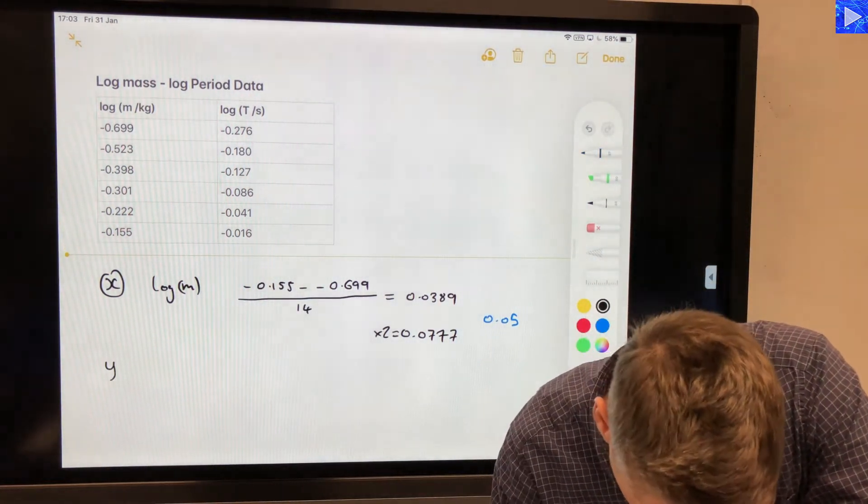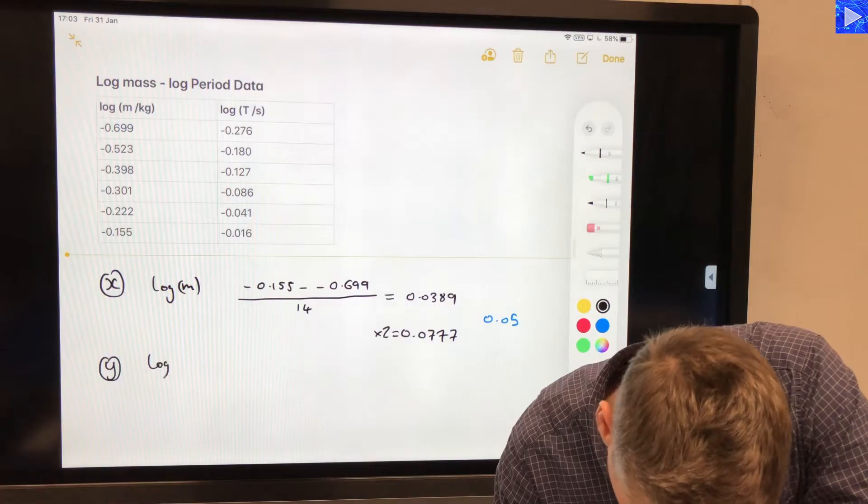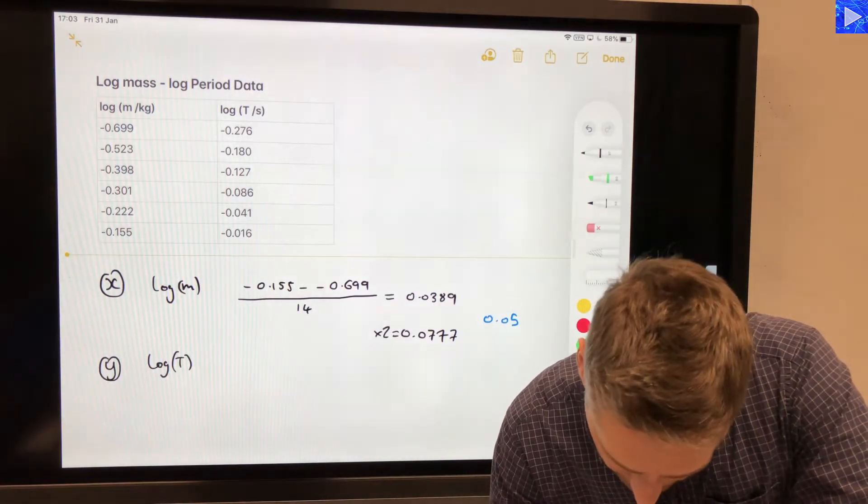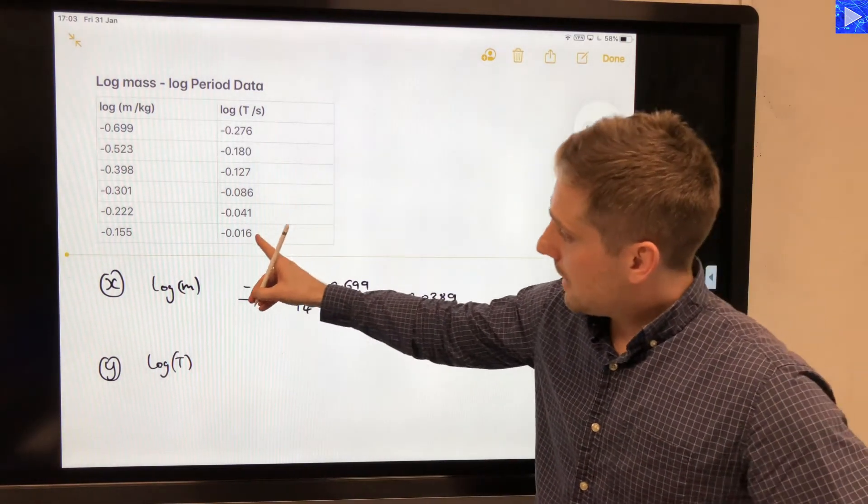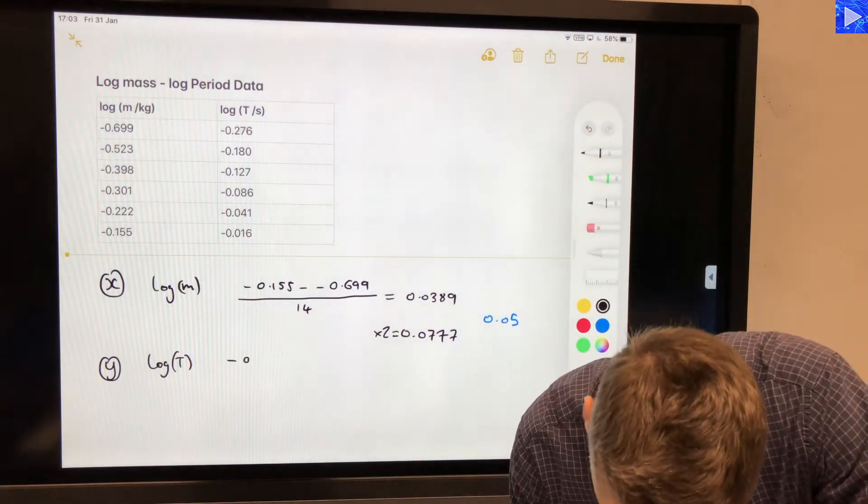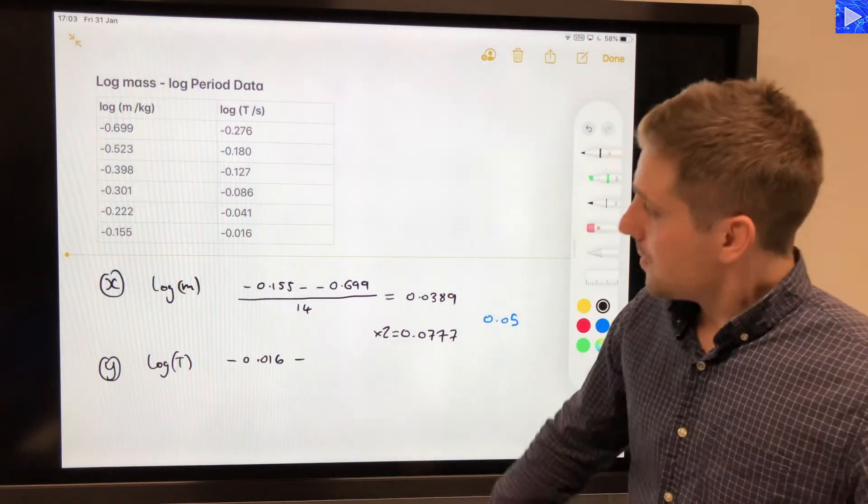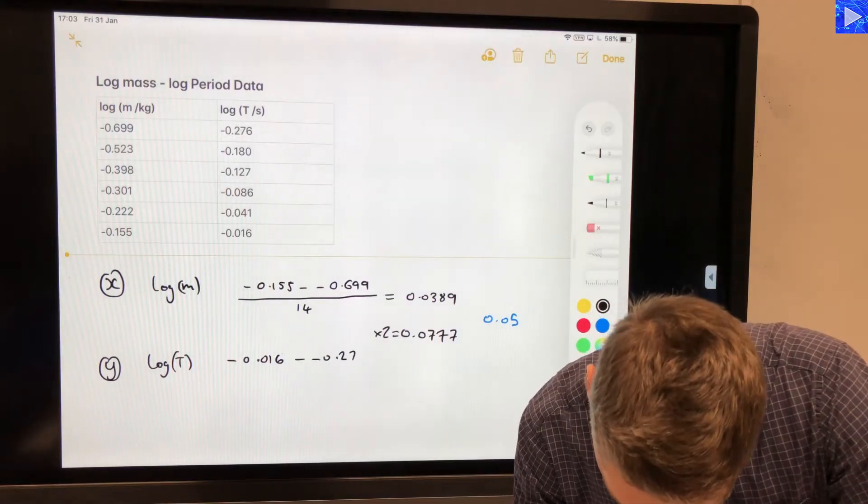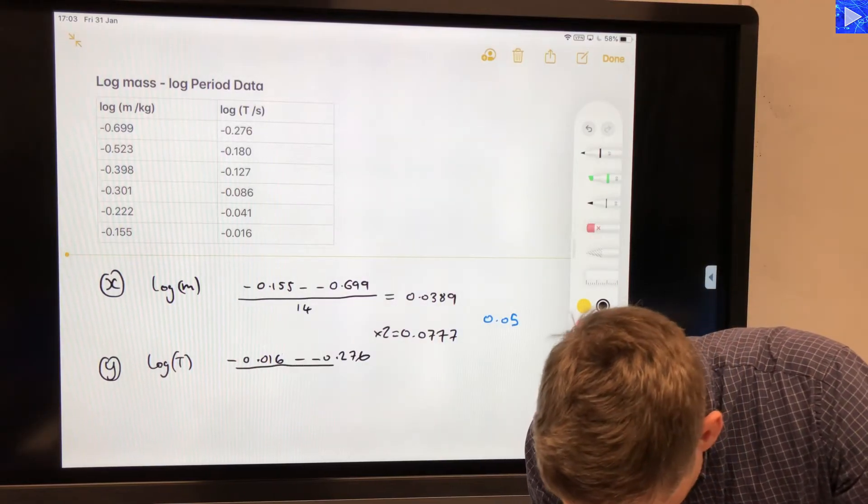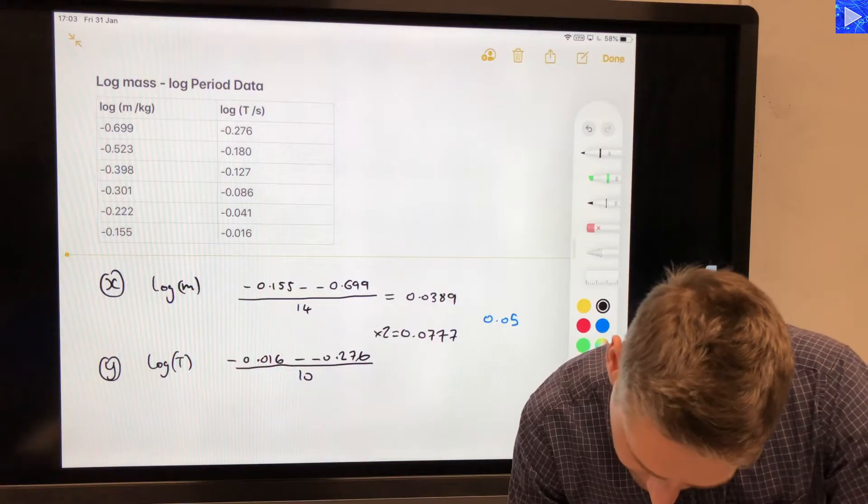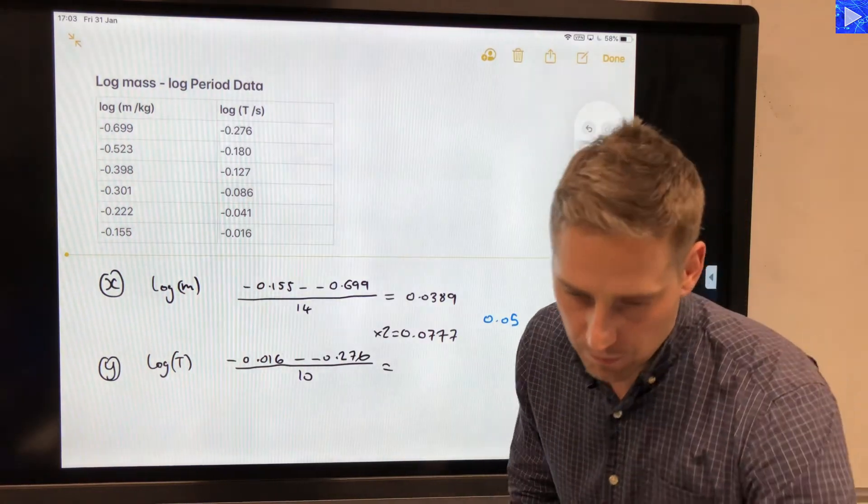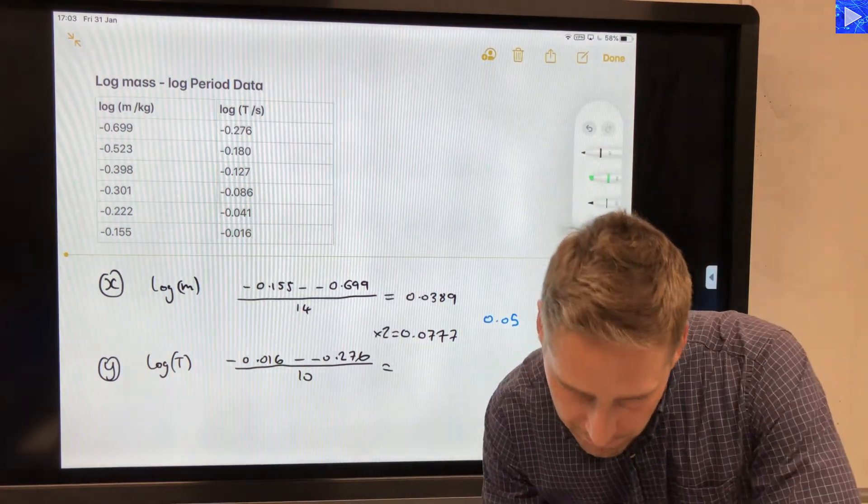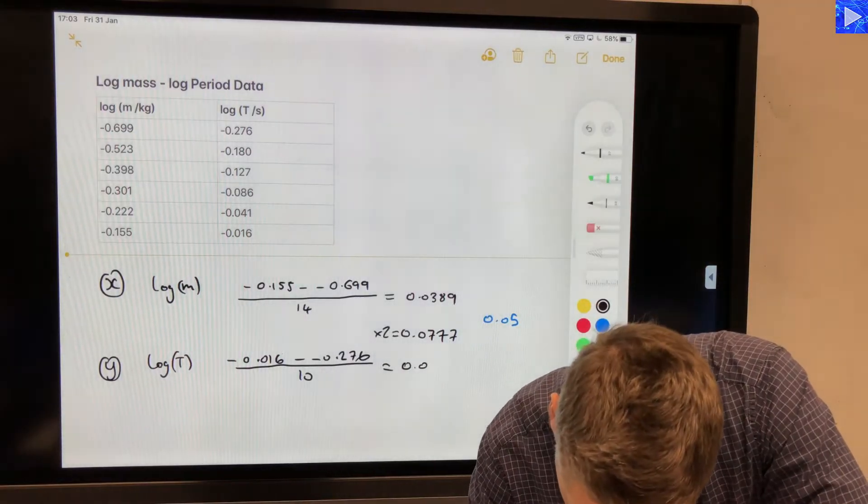And then we'll do the same thing in the y direction, this is with log t. So my maximum value is minus 0.016, minus 0.276, and that will all be divided by 10. So that comes out as 0.026.